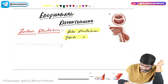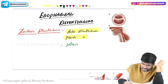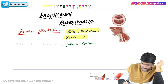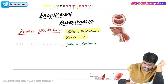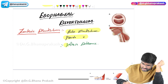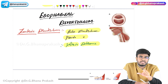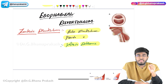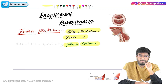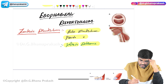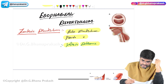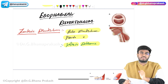From where does this diverticulum originate? There is an area called Killian's dehiscence. This Zenker's diverticulum is originating from Killian's dehiscence. Where exactly is Killian's dehiscence present?